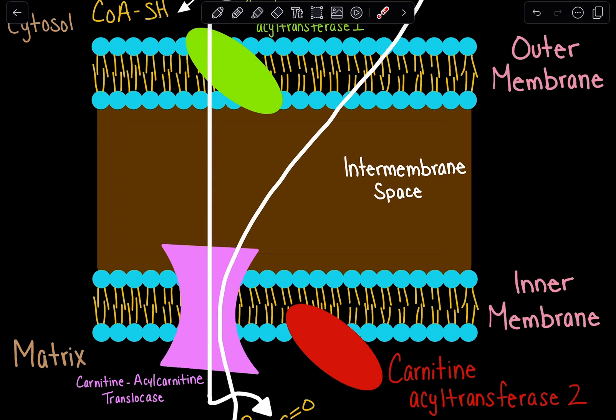Fatty acids that are shorter in length can cross both of these membranes and reach the matrix of the mitochondria. But when the fatty acids are too long, they cannot cross the inner membrane.